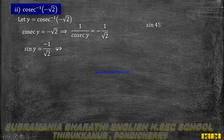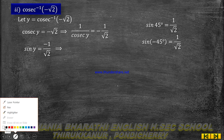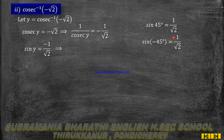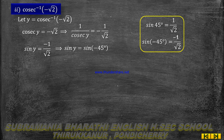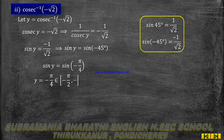This gives sin y equal to minus 1 by root 2. We know sin of minus 45 degrees equal to minus 1 by root 2, so sin y equal to sin(−π/4). Therefore y equal to minus π by 4, which belongs to the range [−π/2, π/2] excluding 0.